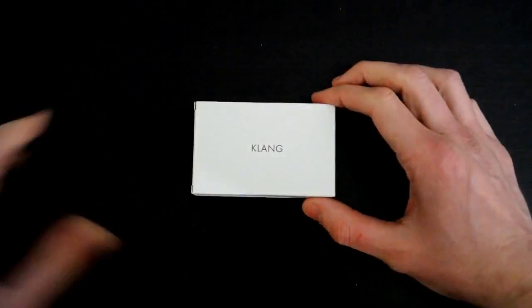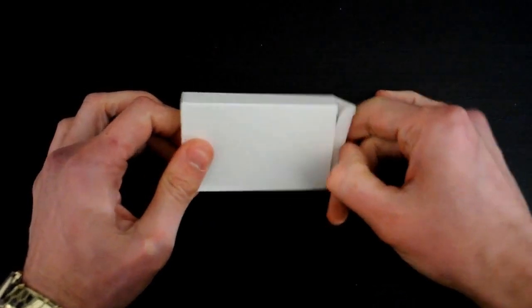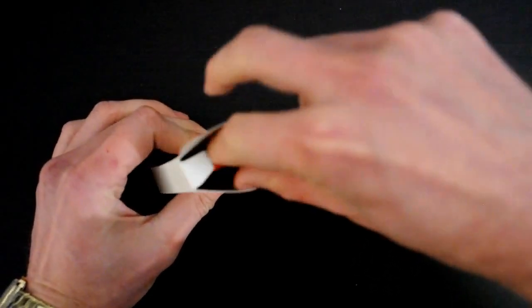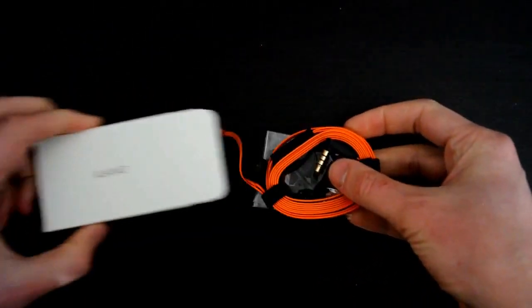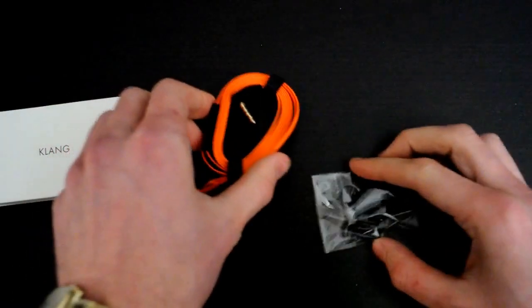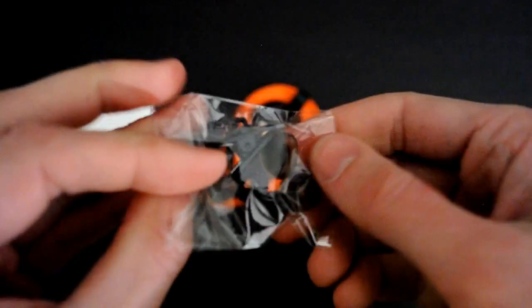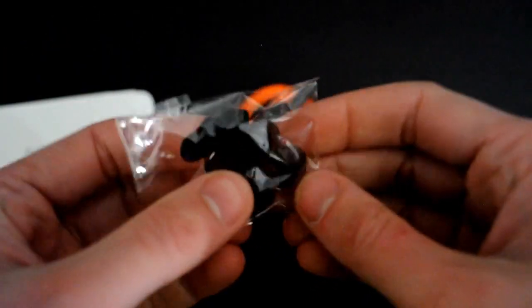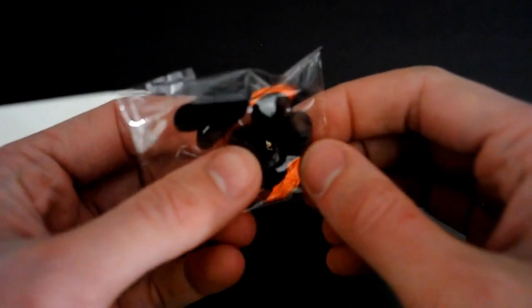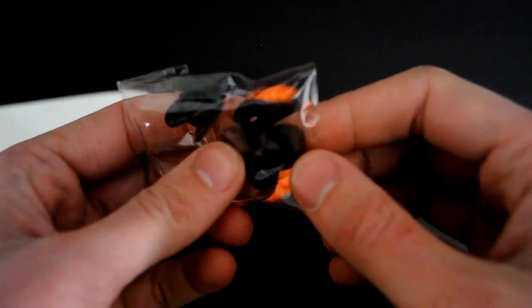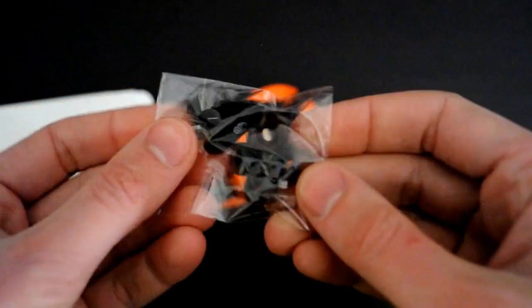Now for the big deal, Klang. So here we have it. First up, we have a plastic bag including different sized silicone ear plugs. They come in three sizes: small, medium, large, and you also have a clip attached. Really nice.